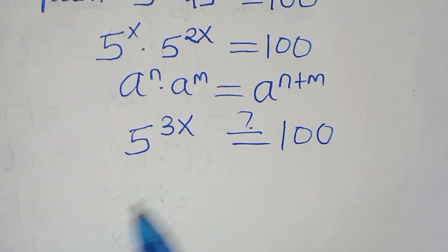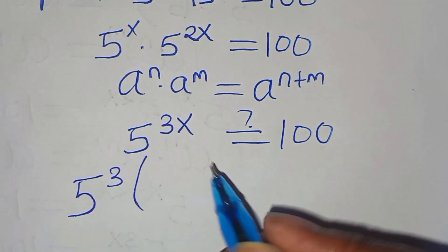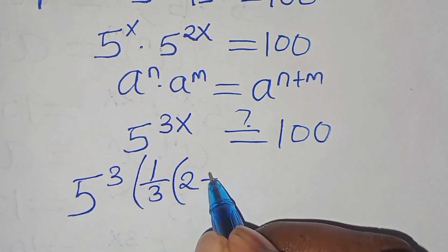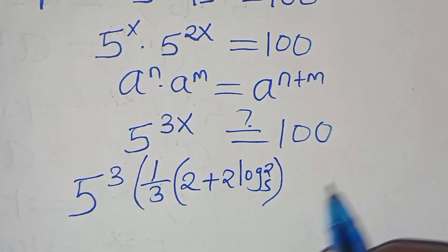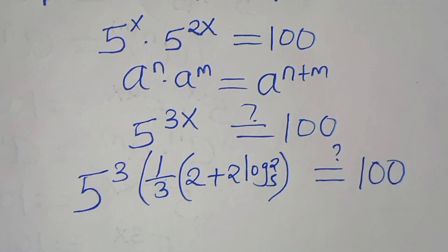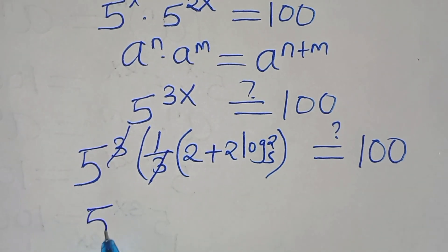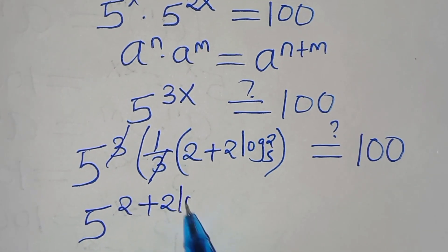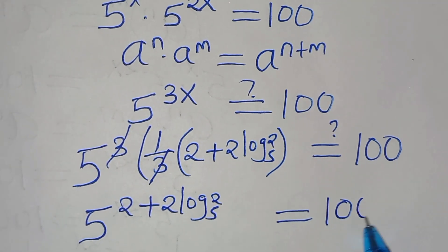Let's substitute the value of x, so that we have 5 to the power of 3 times x, which is (1/3)(2 plus 2·log₅2), and this should give us 100. Here 3 and 3 simplify, so that we have 5 to the power of 2 plus 2·log₅2, this should give us a value of 100.